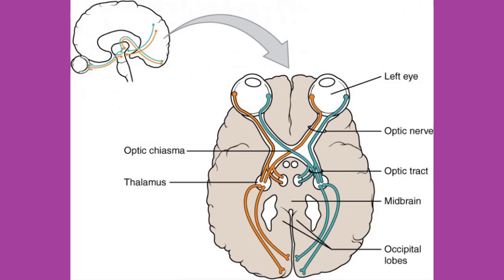There is an important point to make about these terms, which is that they can both be used to refer to the same bundle of axons. When those axons are in the PNS, the term is nerve, but if they are in the CNS, the term is tract. The most obvious example of this is the axons that project from the retina into the brain. Those axons are called the optic nerve as they leave the eye, but when they are inside the cranium, they are referred to as the optic tract. There is a specific place where the name changes, which is the optic chiasm, but they are still the same axons.